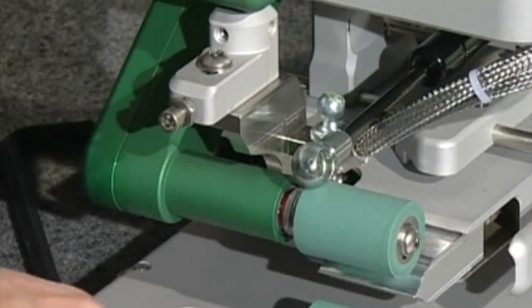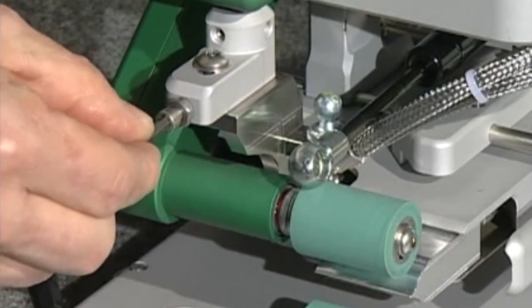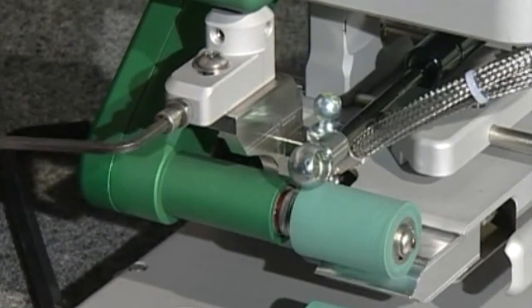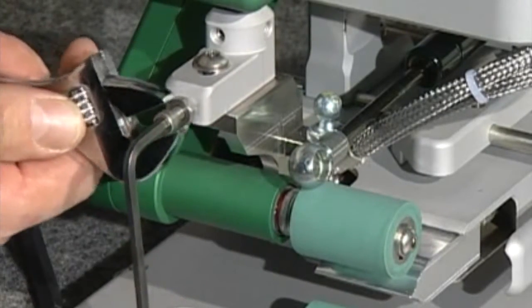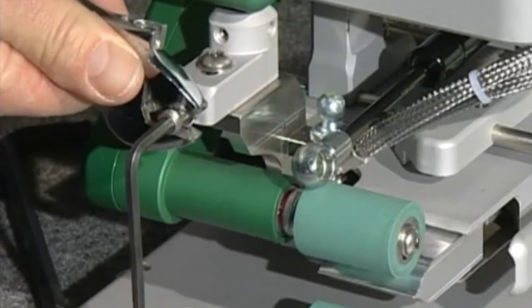Using the hex wrench, turn the adjustment screw counter-clockwise one or two revolutions and retighten the locking nut. It is at your discretion how many revolutions to make.